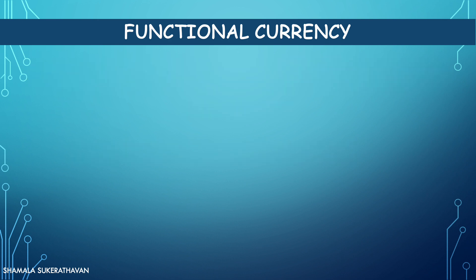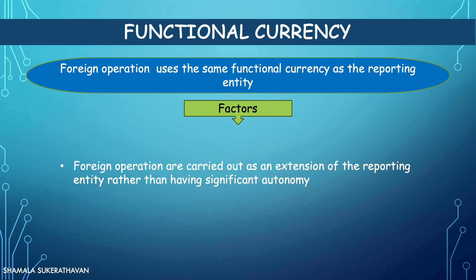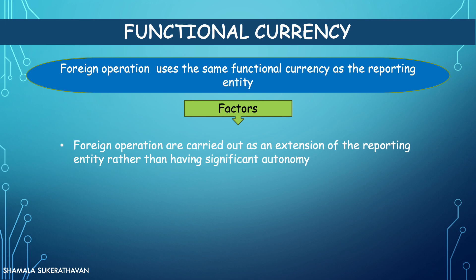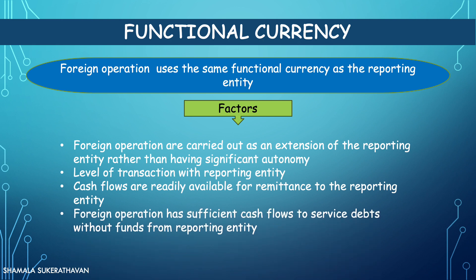A foreign operation may decide to use the same functional currency as the reporting entity. For example, a foreign subsidiary uses the same functional currency as its parent. In so doing, the following factors should be considered: 1. The activities of the foreign operation are carried out as an extension of the reporting entity, rather than being carried out with a significant degree of autonomy. 2. Transactions with the reporting entity are high or low as a proportion of the foreign operation's activities. 3. Cash flows from the activities of the foreign operation directly affect the cash flows of the reporting entity and are readily available for remittance to the reporting entity. 4. Cash flows from the foreign operation's activities are sufficient to service debts without funds being made available by the reporting entity.